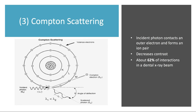Compton scattering is a combination of the previous two interactions. The incident photon contacts an outer shell electron — like coherent scattering — but it forms an ion pair, like photoelectric absorption. Part of the incident photon contributes to ejecting an electron and forming an ion pair, while the other part contributes to a scattered photon.